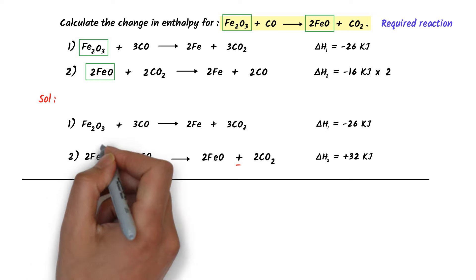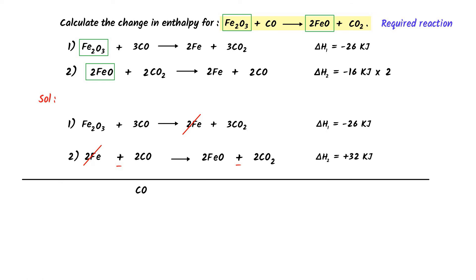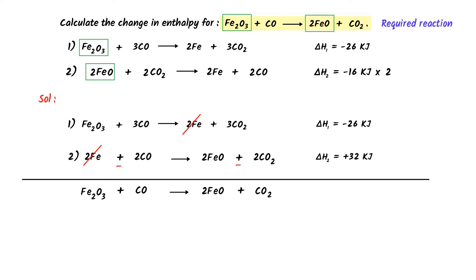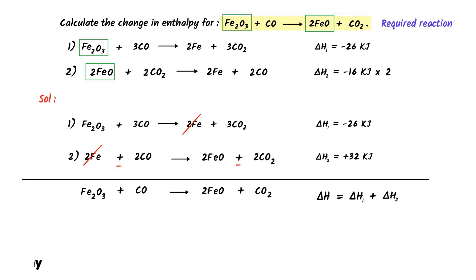I subtract reaction 2 from reaction 1. The 2Fe terms cancel out. I get Fe₂O₃ + 3CO − 2CO = 1CO, and 3CO₂ − 2CO = the correct products with 2FeO and 1CO₂. Thus I get the required reaction. According to Hess's Law, ΔH = ΔH₁ − ΔH₂ = (−26 kilojoule) + (32 kilojoule). Wait — using the subtraction approach: ΔH = −26 + 32 = +6 kilojoule. The enthalpy change for this reaction is ΔH = +6 kilojoule.